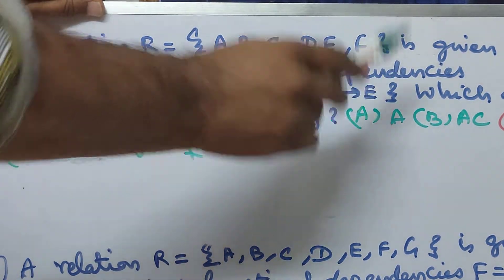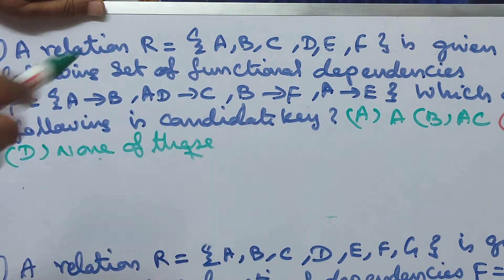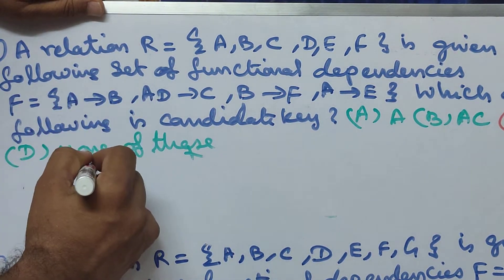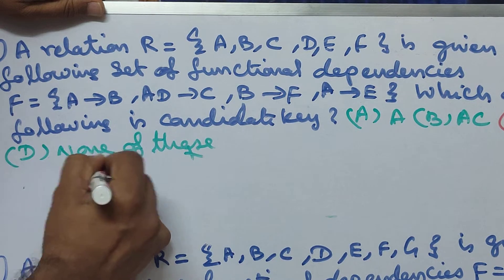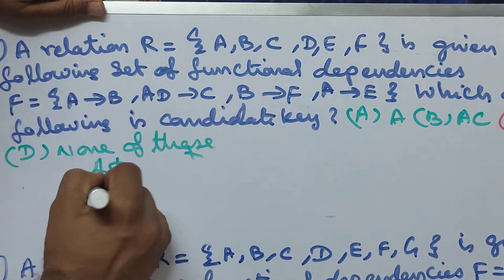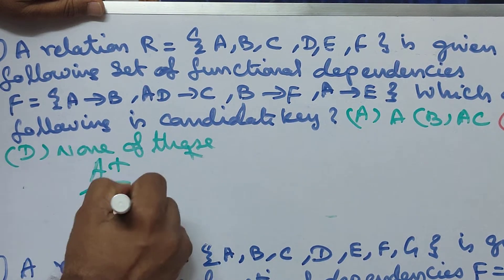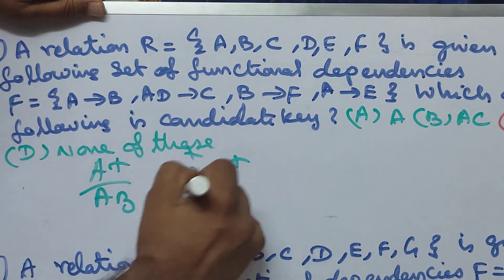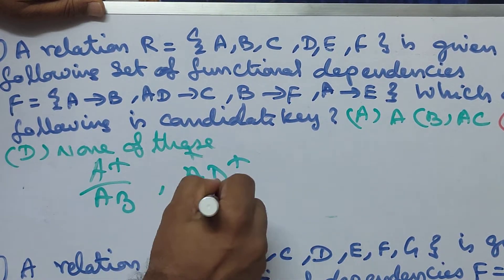Now we will find the closure of A. Closure of A: start with A, then A implies B, so we get A, B. Next, A, D closure: A, D implies C, so we get A, D, C, B.